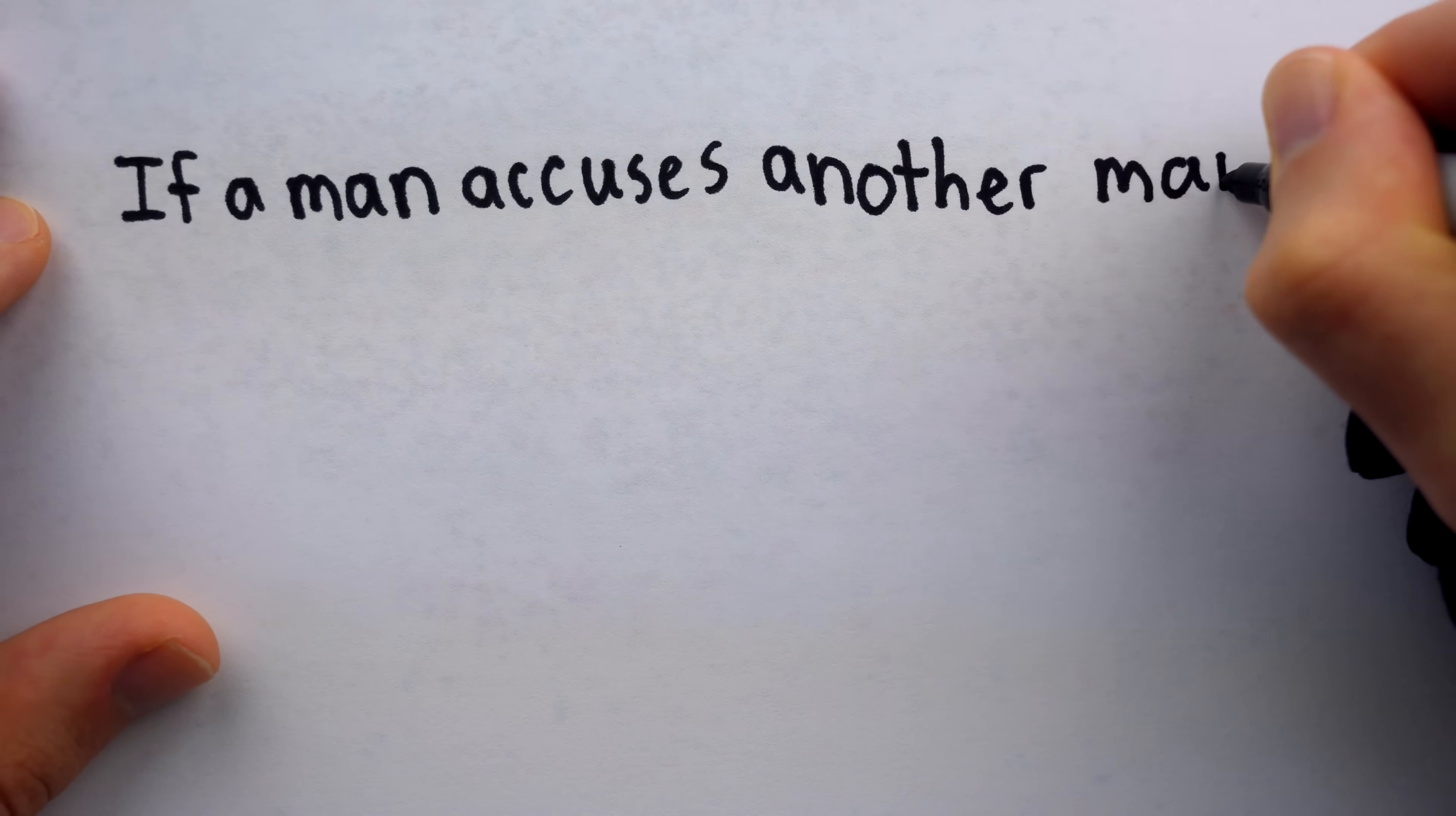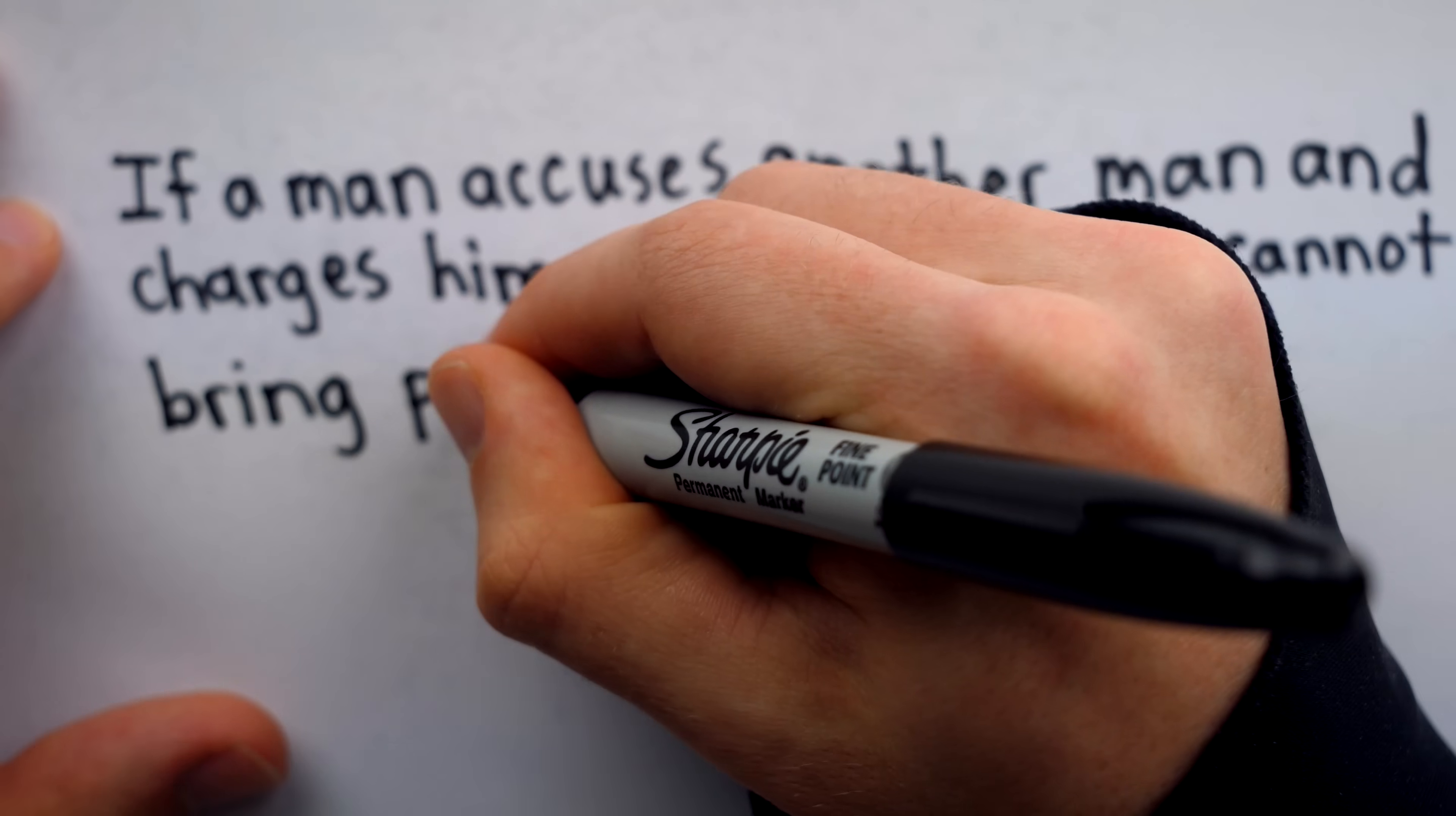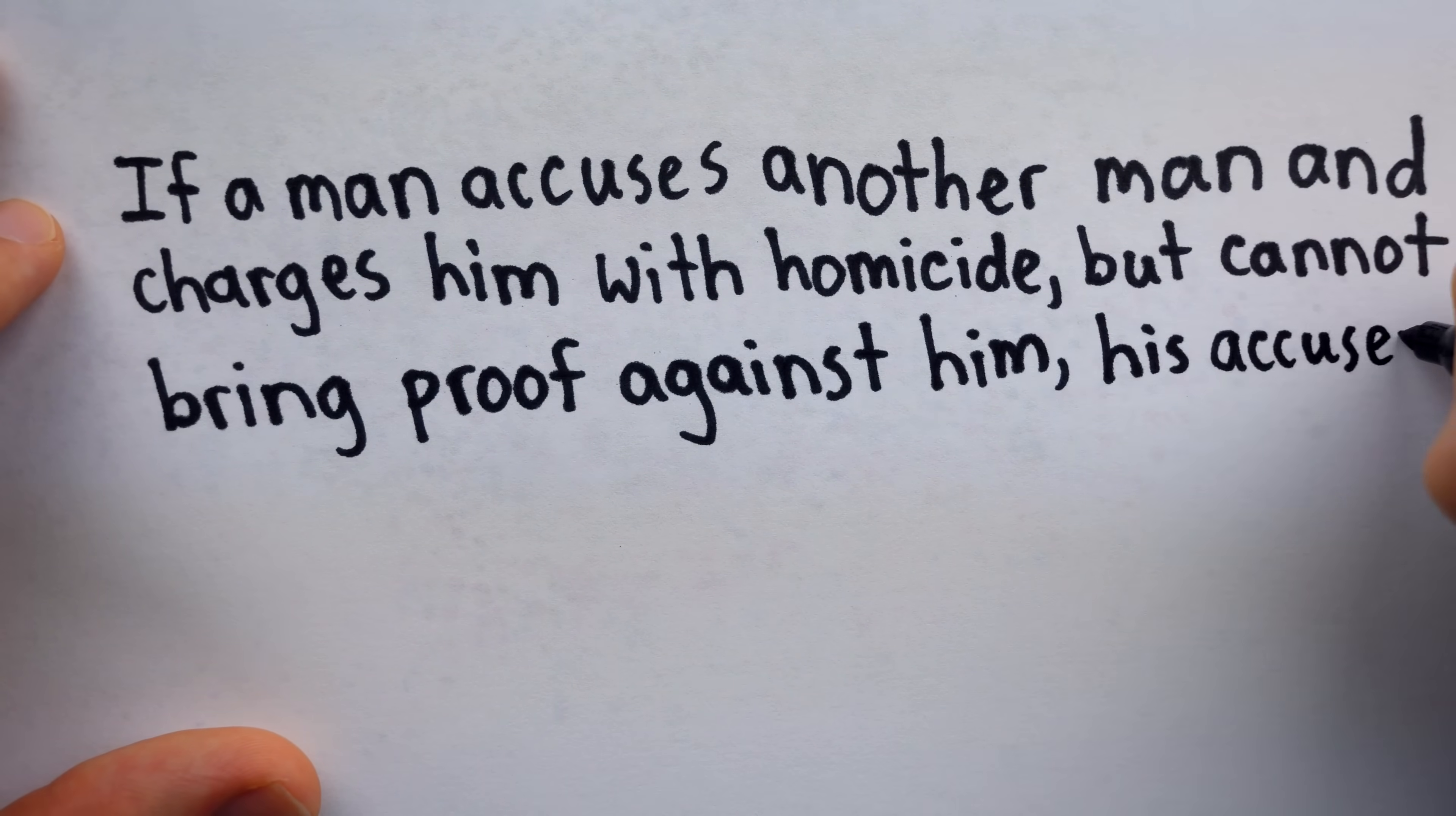If a man accuses another man and charges him with homicide, but cannot bring proof against him, his accuser shall be killed.